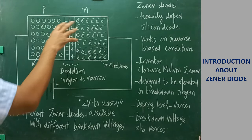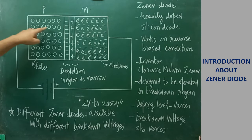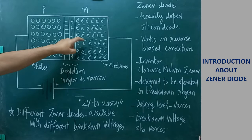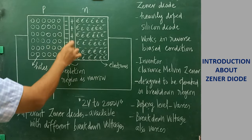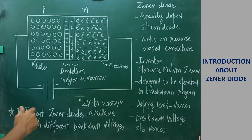In the P end, more number of trivalent impurities are doped. In the N end, more number of pentavalent impurities are doped. Because of the doping of more pentavalent impurities, more number of electrons are available, and more number of holes are available. Very close to the junction the depletion region is very narrow. That is why this is called a heavily doped silicon diode.